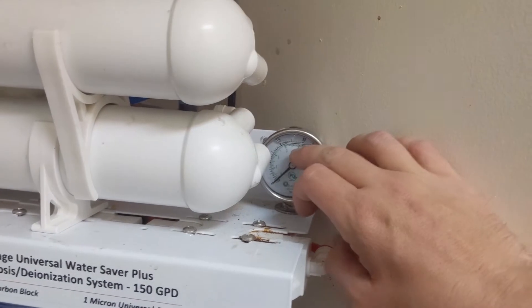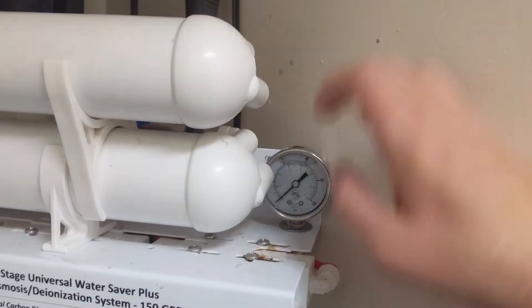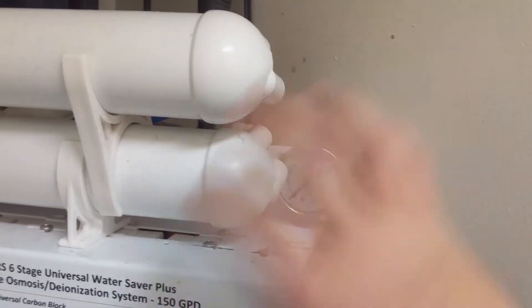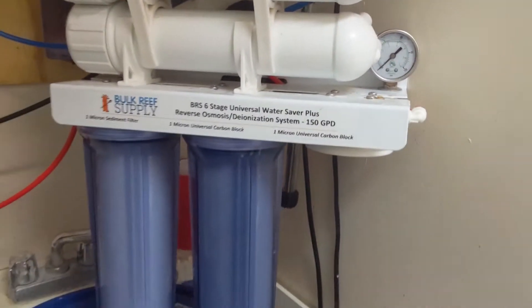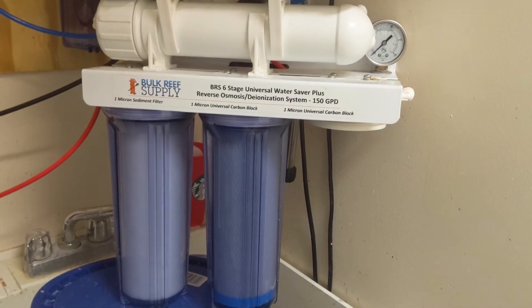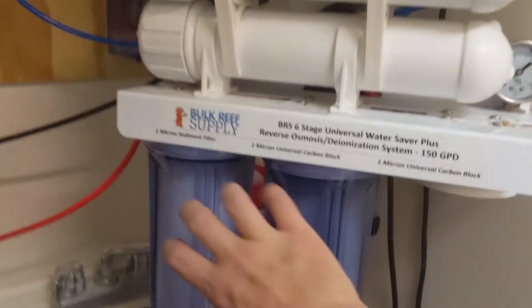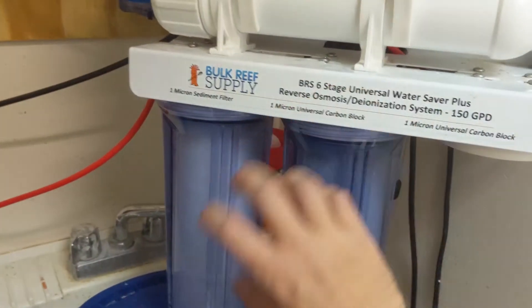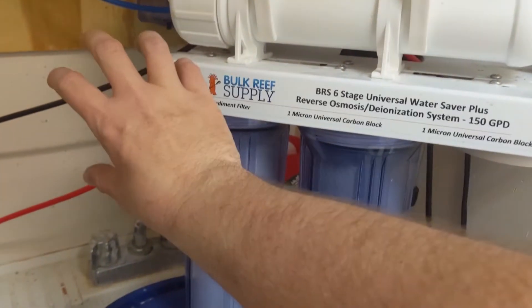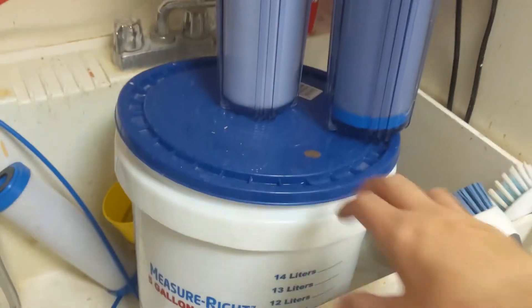So if I go to make RODI water and my pressure isn't where I want it because somebody hopped in the shower or there's a hose running outside, I know not to make it. That won't give me the proper TDS I need because I won't have adequate pressure going through the system to filter all the waste water out and only put the good water in the bucket.